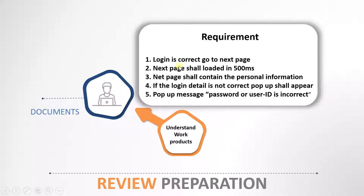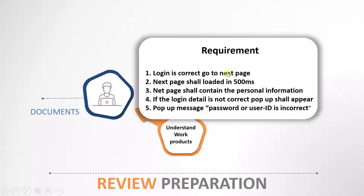For example, the requirement states: if login is correct, go to the next page. The next page shall load in 500 milliseconds and the content of the next page will be the personal information. If the login is not correct, then a popup shall appear and the popup will have contents like 'password or user ID is incorrect.' So this is what the reviewer has to understand.